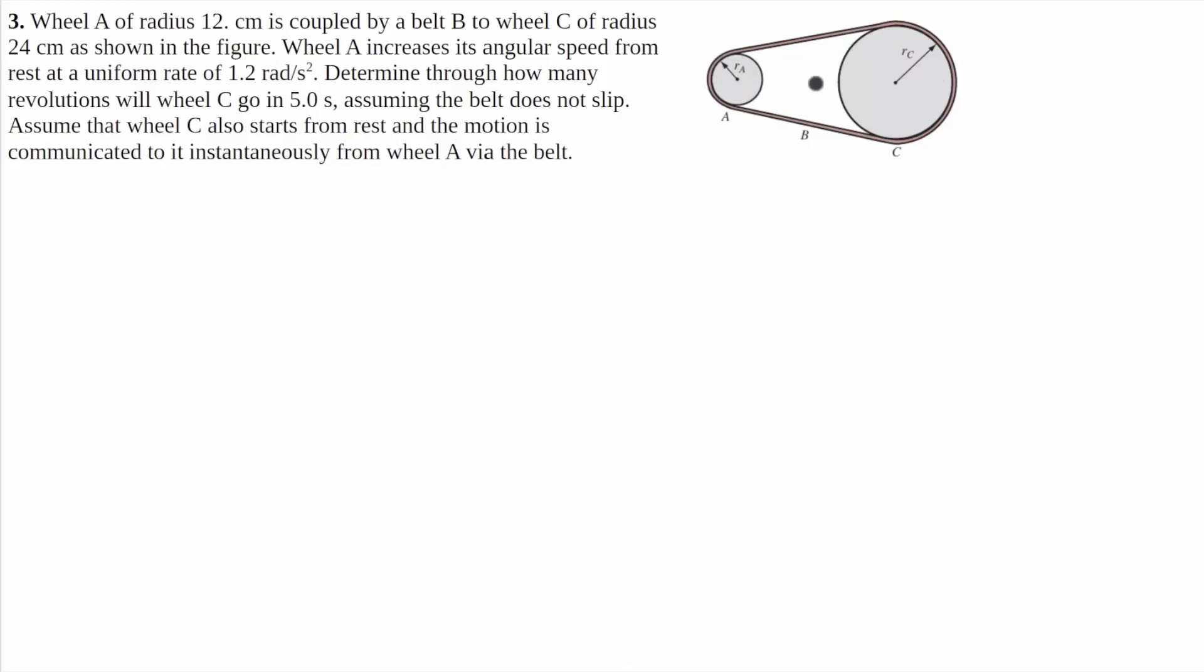Here's number three. There's a wheel A connected to a wheel C on this belt here, and it wants us to find the number of revolutions that wheel C will go through in five seconds.